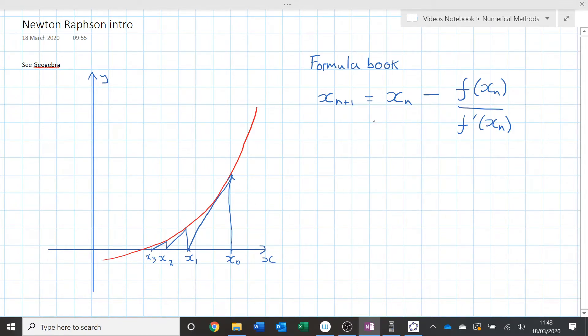The other nice thing about it, as opposed to the fixed point iteration, is that it's always this iterative formula. Whereas in the fixed point iteration, it depends on your rearrangement as to what the iteration is.